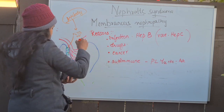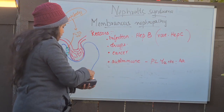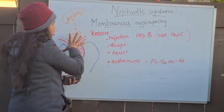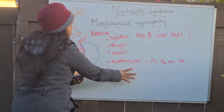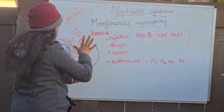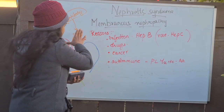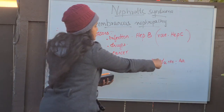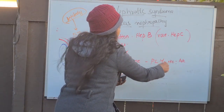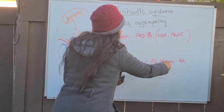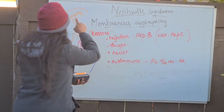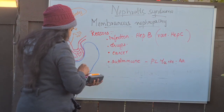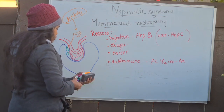This is the pathology in membranous nephropathy — the antibody is directed against the PLA2 receptor on the podocytes, and that is what is causing membranous nephropathy.